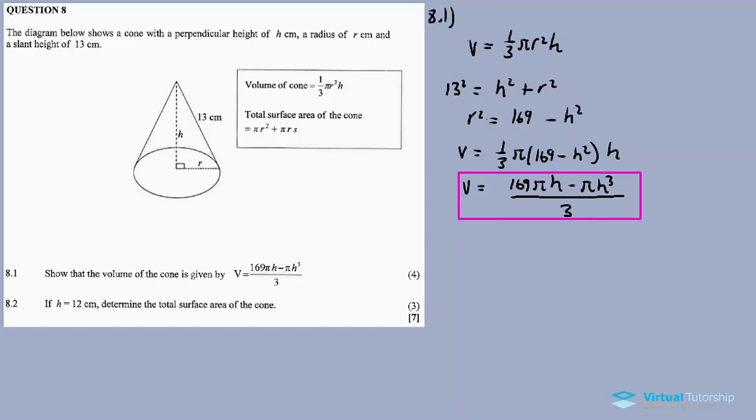Now for 8.2, if H is equal to 12 centimeters, determine the total surface area of the cone. So they give us H. If I have H, now I can calculate the value for R, just like we had on 8.1. 8.1 we expressed R in terms of H.